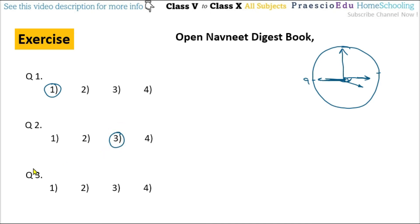Question number 3: which type of angle is formed between the hands of a clock at 9 o'clock? At exactly 9 o'clock, the minute hand is on 12 and the hour hand is on 9. This is a right angle, and option number 2 is the correct one.